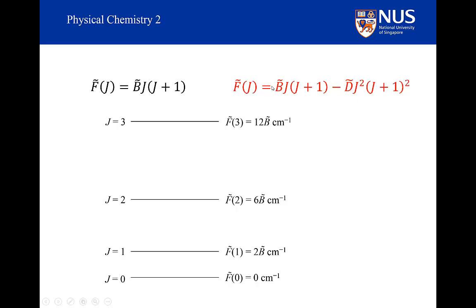So we have our original term, which is the same for the rigid and non-rigid rotors, but you have this additional term, which is minus D times J squared into (J+1) all squared.